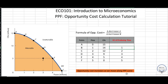Now that we have both the theoretical and mathematical aspects covered, I hope the calculation of opportunity cost from the PPF is clear to you. You should also be able to calculate the opportunity cost of producing CDs by yourself — I would recommend giving it a shot. With that, I end this tutorial. Thank you.